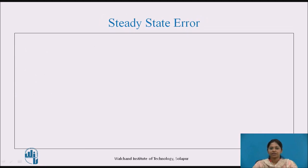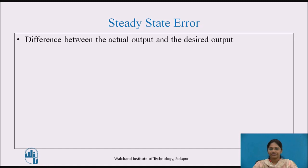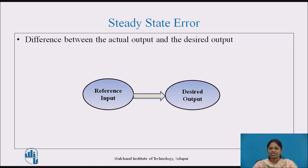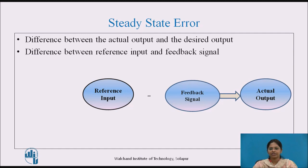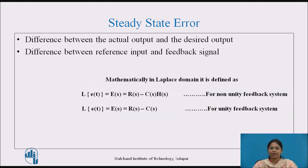Steady-State Error: The steady-state error is the difference between the actual output and the desired output. The reference input tells us the level of desired output, and the actual output is fed back through the feedback element to compare it with the reference input. Hence, it can be defined as the difference between the reference input and the feedback signal. Mathematically, in the Laplace domain: E(s) = R(s) − C(s)·B(s).